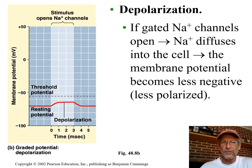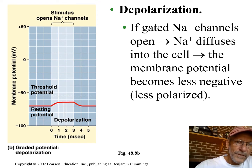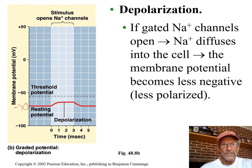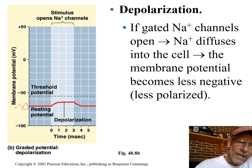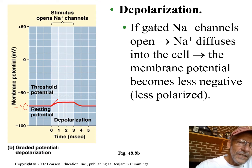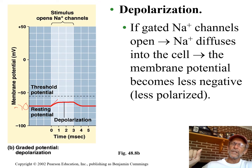Here's our graph again. We're at resting potential, negative 70 millivolts, meaning the inside is 70 millivolts more negative than the outside. This nerve cell is at rest. Anything that causes the inside to become a little less negative — depolarizing it — is on the way to an action potential, to that impulse.